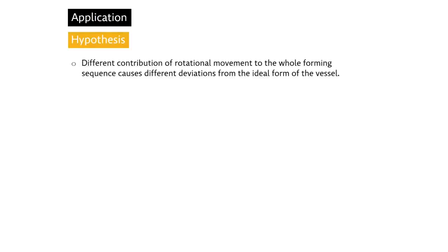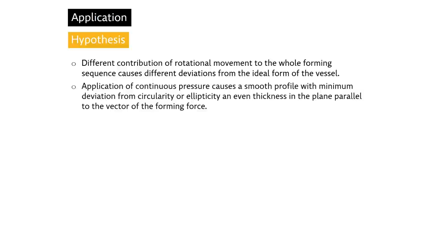Our aim is to apply these concepts to distinguish different forming methods utilizing rotational movement. Our hypothesis is that the different contribution of rotational movement to the whole forming sequence causes different deviations from the ideal form of the vessel. During throwing, the potter exerts a continuous pressure. She or he may vary the pressure during forming, intentionally or unintentionally, but the usual way is to keep the pressure constant as much as possible. Given the speed of rotation, the pressure changes cause gradual changes in thickness in the direction of the vector of the forming, causing a smooth profile with minimum deviations from circularity or ellipticity and even thickness.